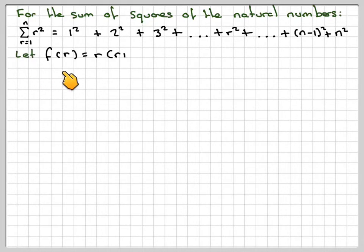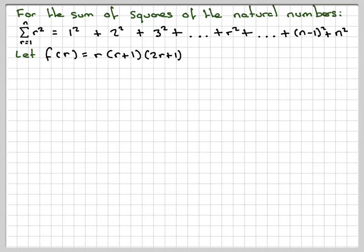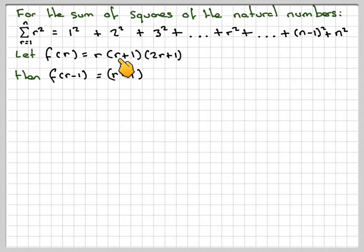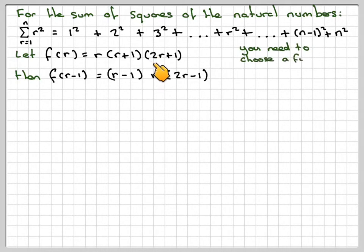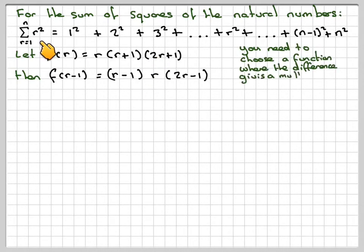If we let f(r) equal r times (r+1) times (2r+1), we'll talk about why we chose that in a minute. Then f(r-1) will become (r-1) times r times (2r-1).